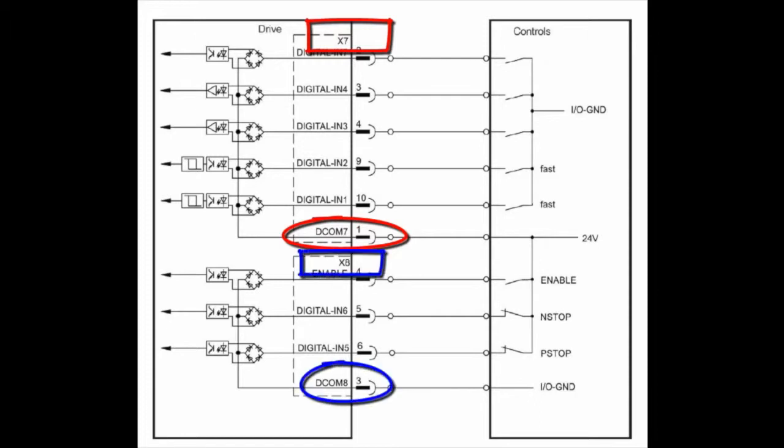X7 pin 1 marked DC COM, digital common, and X8 pin 3, also marked DC COM or digital common, are not connected together.